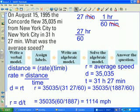So I'm going to take distance equals rate times time and solve it for the rate. So rate is distance divided by time, and now all I have to do is substitute. I'm going to substitute for distance 35,035, and I'm going to substitute for time 31 hours 27 minutes, but I need to express that in a consistent unit, so I'm going to express it in terms of hours: 31 hours and 27 sixtieths of an hour.